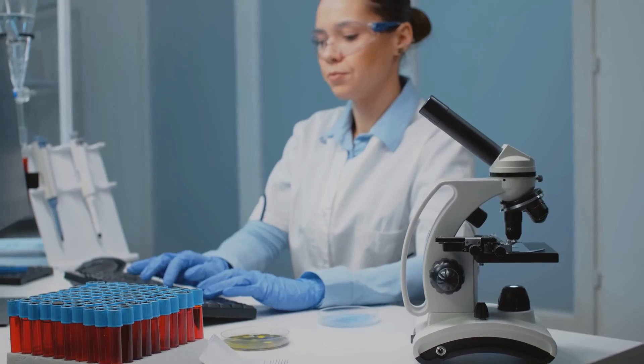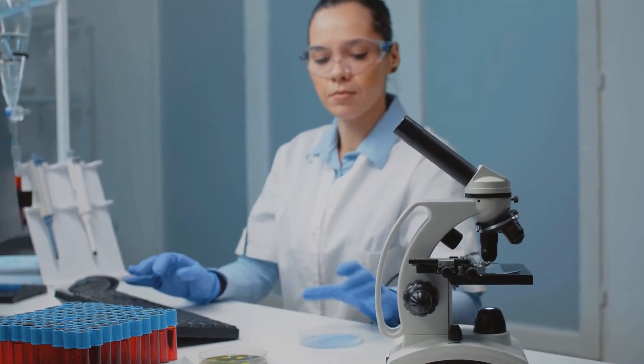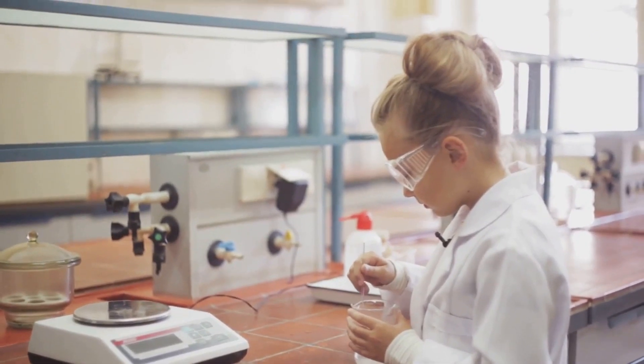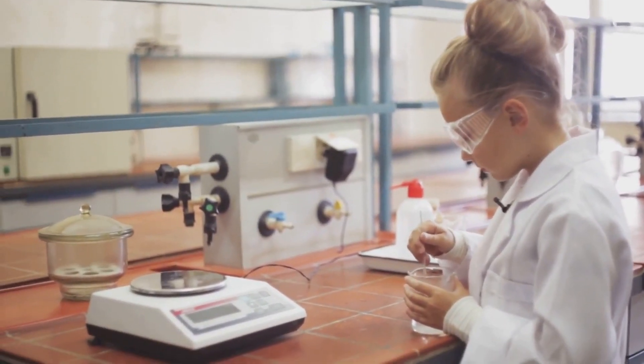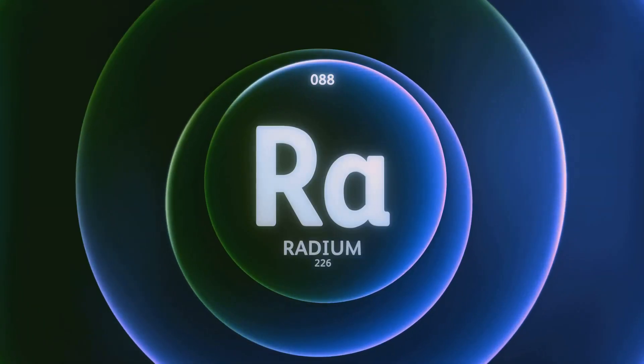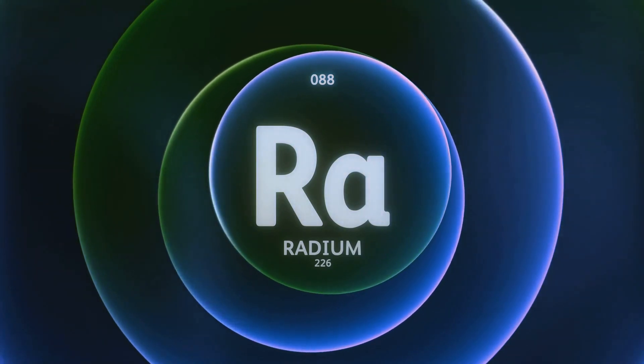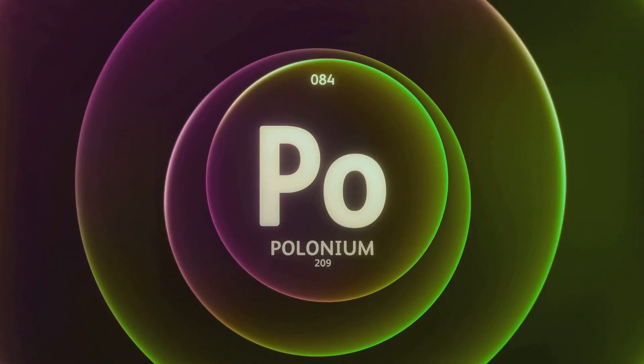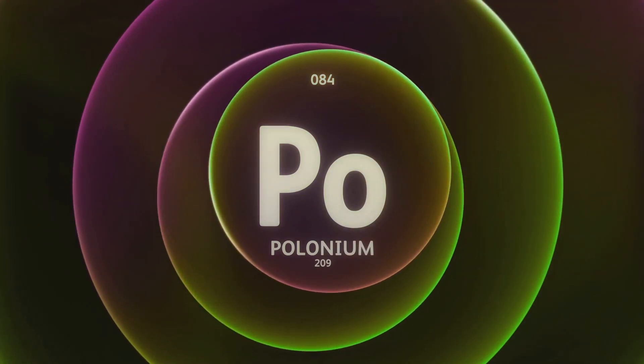The world was just starting to understand the mysteries of the atom, thanks largely to the work of two remarkable scientists, Marie Curie and Albert Einstein. Marie Curie, a name synonymous with groundbreaking research, dedicated her life to studying radioactivity. Her relentless pursuit of knowledge led to the discovery of polonium and radium, two radioactive elements that would later play a crucial role in the development of nuclear power.